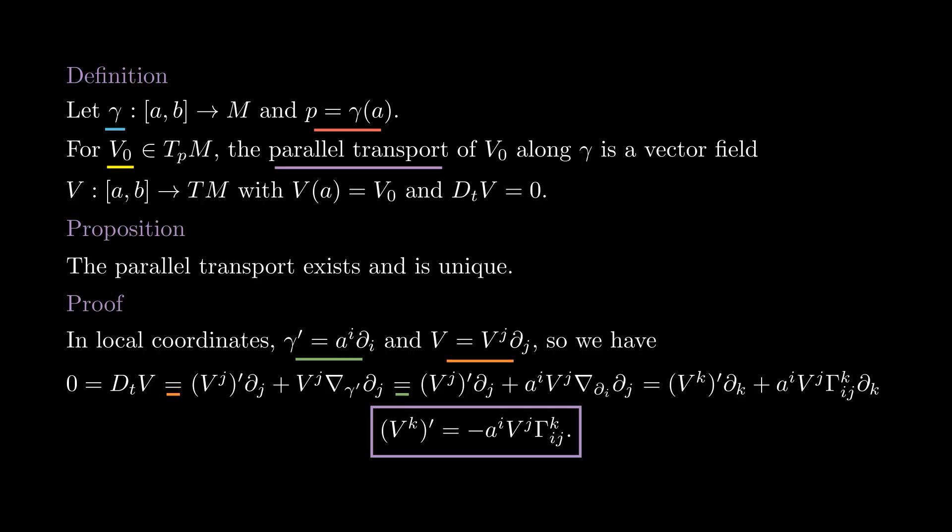Now this works if gamma is contained in a chart. But gamma is compact, so we can cover it by finitely many charts and define the parallel transport on each piece covered by a single chart. After finitely many steps, we get the full parallel transport of V0 along the entire curve gamma.